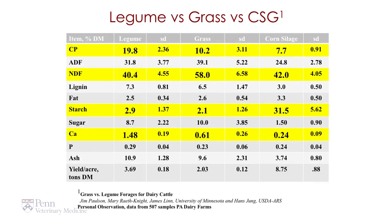If we look at a comparison of grasses versus legumes versus corn silage: legumes are high in protein at 19.8%; grasses are about 10.2%; corn silage is about 7.7%. The NDF fiber content — legumes are about 40%, grass is about 58% (notice higher fiber in grass), and corn silage is about 42%. Starch content is low in legumes at 2.9%, low in grasses at 2.1%, and high in corn silage at 31.5% because it contains the ears of corn. Legumes have high calcium at 1.48%, versus grasses at 0.61% and corn silage at 0.24%.